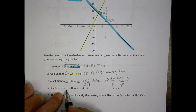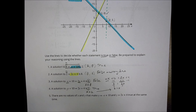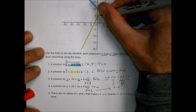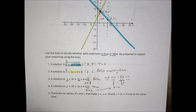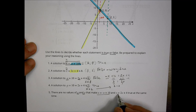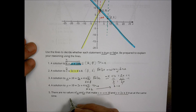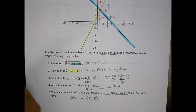Statement 4 says a solution to negative x plus 10 equals 2x plus 4 is x equals 2. We just proved that algebraically, so this is indeed a true statement. When x equals 2, the two lines intersect at the point 2 comma 8. Statement 5 says there are no values of x and y that make both equations true at the same time — that's false, because the point 2 comma 8 satisfies both equations. That is our solution to this system.